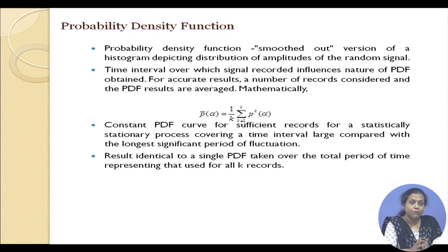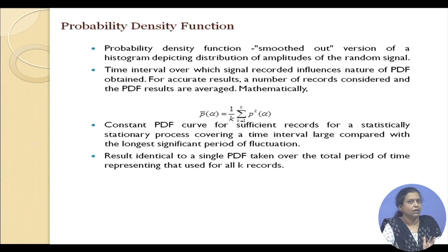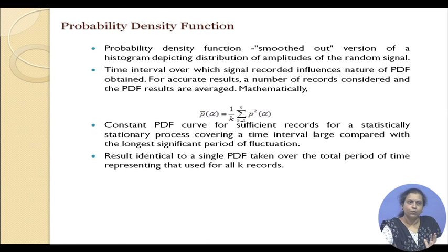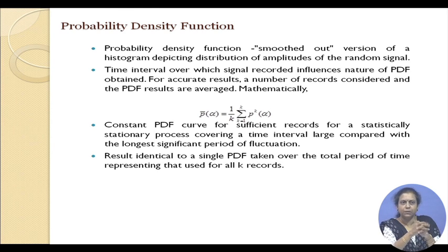If we record for a very long period, naturally we will get a curve whose nature will not anymore depend upon the period or the time of recording. If we record the signal for an amount of time larger than the fluctuations in the flow signal, then naturally what we get is a stationary PDF.